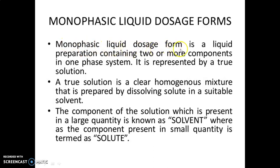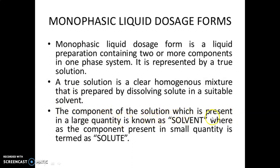A monophasic liquid dosage form is a liquid preparation containing two or more components in a one-phase system. It is represented by a true solution. A true solution is a clear homogeneous mixture that is prepared by dissolving a solute in a suitable solvent. The component present in a large quantity is known as the solvent, whereas the component present in a small quantity is termed as solute.